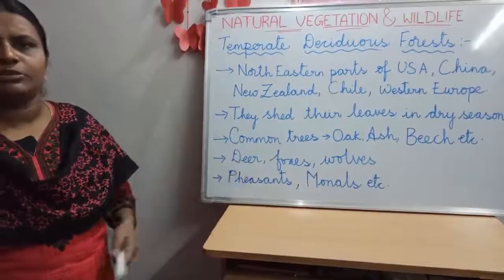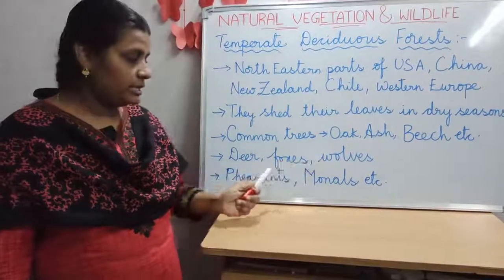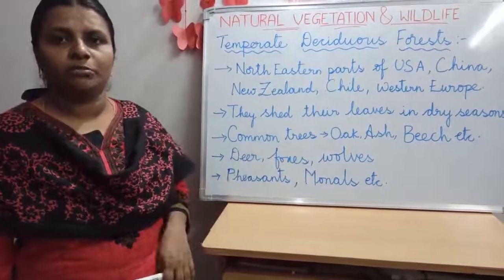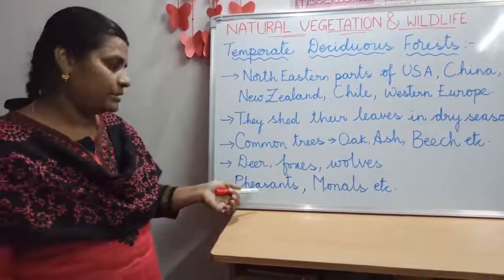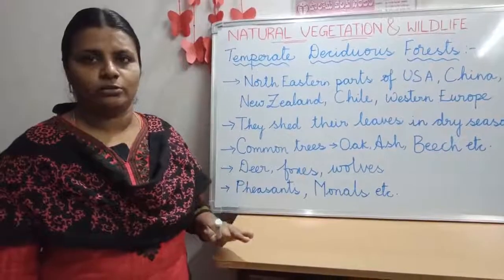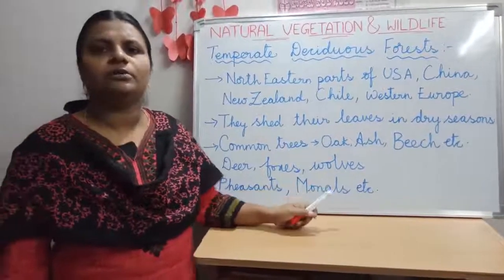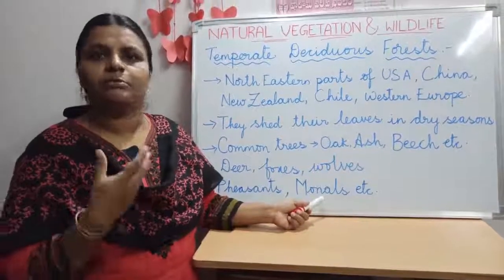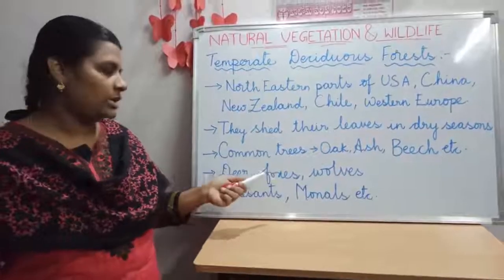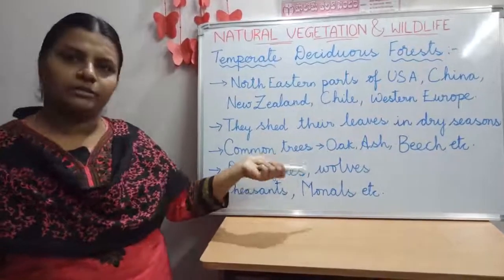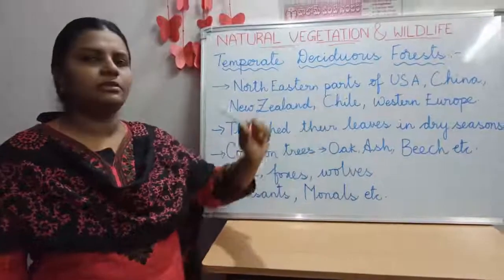Common animals found in temperate deciduous forests are deer, foxes, and wolves. Common birds include peacocks, peahens, and mynahs. These are the birds and animals commonly found in this region, along with the trees we discussed.